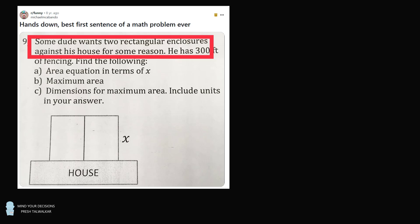Some dude wants two rectangular enclosures against his house for some reason. He has 300 feet of fencing. Find the following: A, area equation in terms of x. B, maximum area. C, dimensions for maximum area. Include units in your answer.